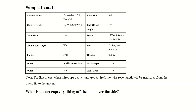Hi, welcome to an ITSA tutorial on finding net capacity. Today I'm going to go over a sample question on the NCCCO swing cab load chart test on the Grove truck-mounted crane. This is sample item number one — you can find this on the CCO website.